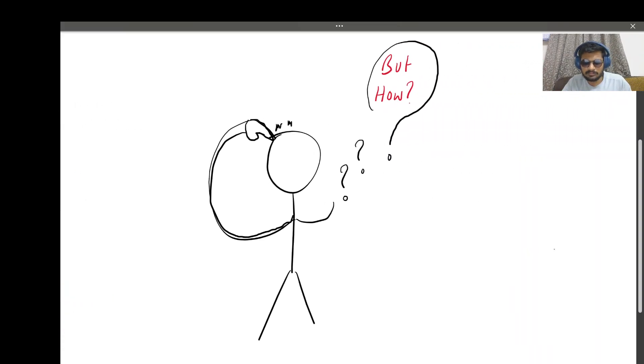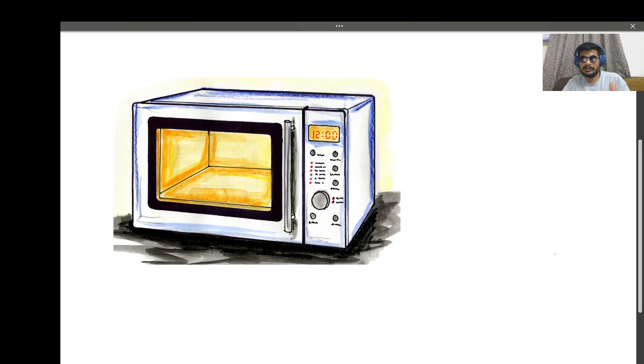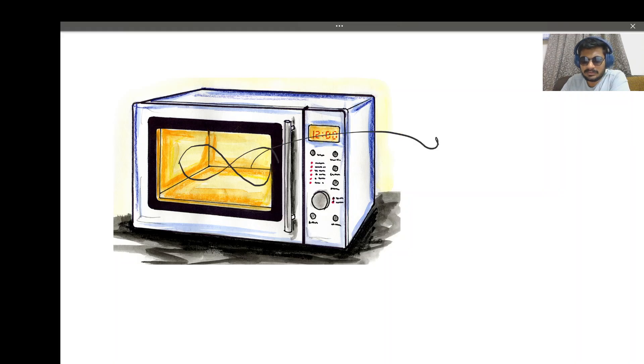Mikey asks but how? It's very simple. A microwave produces light - it produces electromagnetic radiation inside it. There are waves inside it, electromagnetic waves. Electromagnetic waves are light, so the speed of light is the same as the speed of any electromagnetic wave. If I find the speed of this wave, then I can find the speed of light.